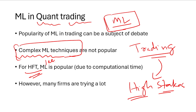In high-frequency trading, machine learning is also less popular, simply because the computational time is high. In HFT, everything needs to happen in a fraction of a second, so you need very fast models, and ML models are not very fast. For example, a random forest with a thousand or ten thousand trees can take a couple of seconds to run — something HFT firms cannot afford.